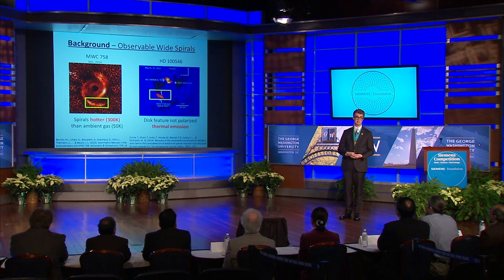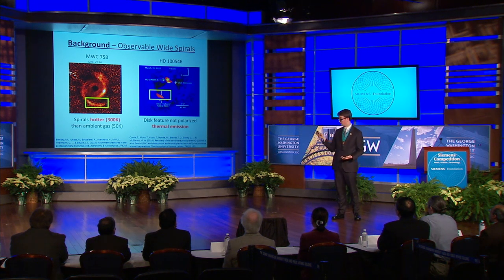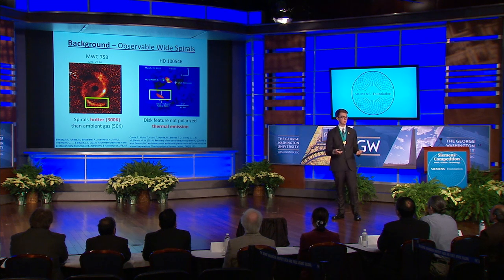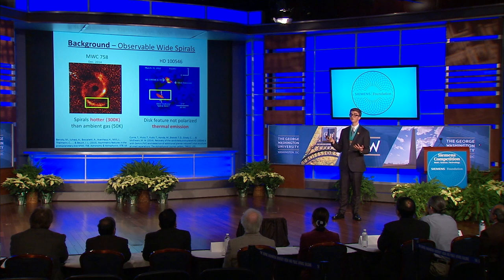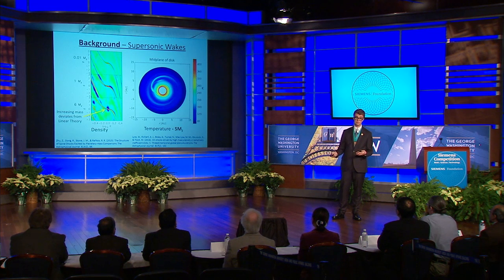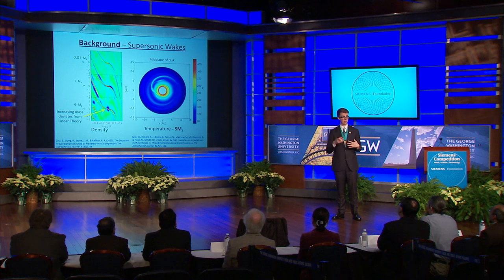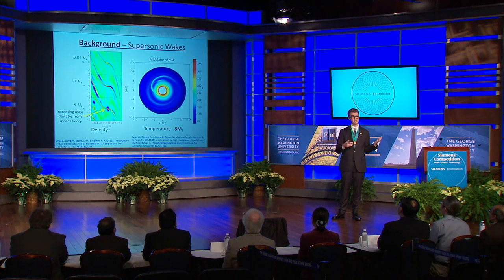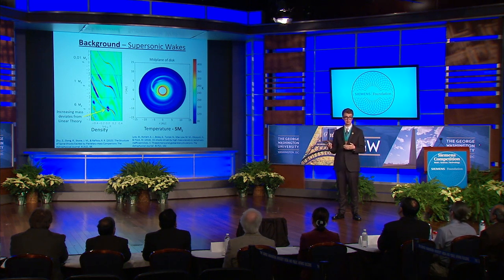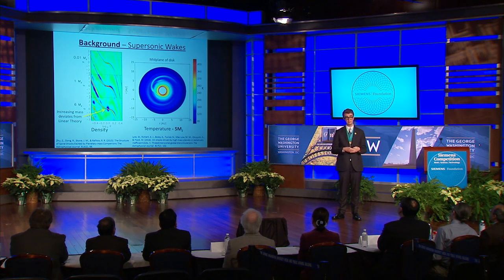While on the right in the system HD 100546, the same spiral in yellow is not polarized, implying thermal emission on the order of 450 Kelvin. To explain this high temperature and the differing morphologies, one explanation may be high-mass planet spiral shocks and the supersonic wakes that come from that.